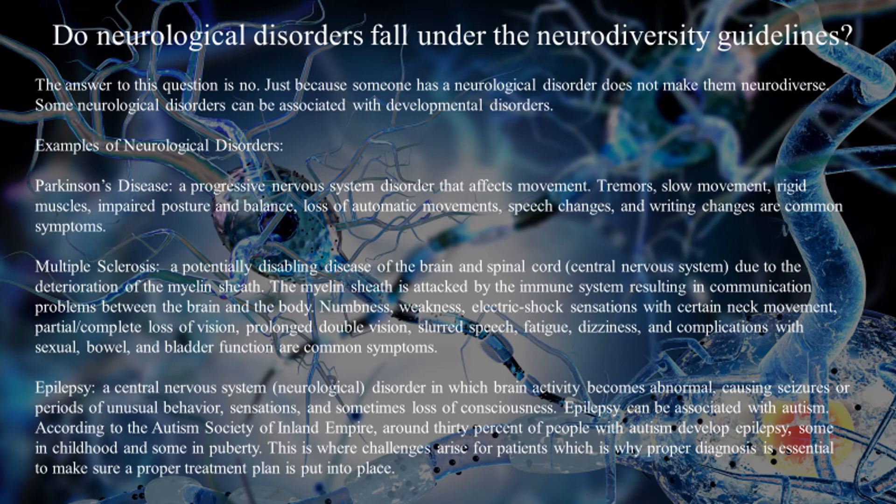Common symptoms of Parkinson's disease include tremors, slow movement, rigid muscles, impaired posture and balance, loss of automatic movement, and speech and writing changes. Multiple sclerosis is a potentially disabling disease of the brain and spinal cord due to deterioration of the myelin sheath, which is attacked by the immune system, resulting in communication problems between the brain and the body. Symptoms include numbness, weakness, electric shock sensations with certain neck movements, partial or complete loss of vision, prolonged double vision, slurred speech, fatigue, dizziness, and complications with sexual, bowel, and bladder function.